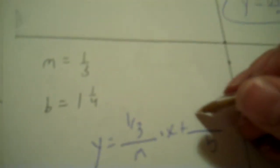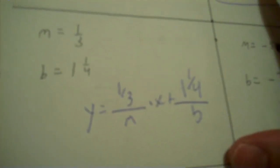That's your m, that's your b. 0.87. Y equals blank times x plus blank. That's your m, that's your b. M is one third, b is one and one fourth.